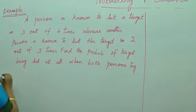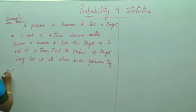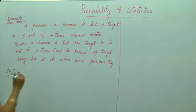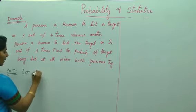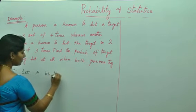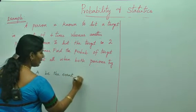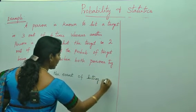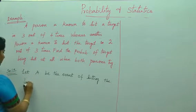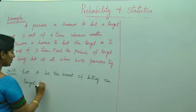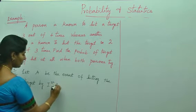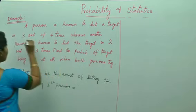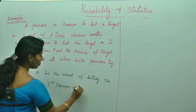First thing we need to first always segregate and write down what is given there. First, let A be the event of hitting the target by first person. That is what they have given, 3 out of 4 times, so 3 by 4.